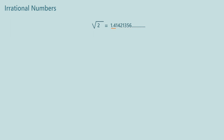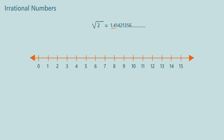Let us see how to represent this on the number line. Though we can show it on the number line, we are not able to measure it accurately in spite of having enough tools to measure. Such numbers are not measurable, or we cannot estimate them precisely. These numbers are not rational numbers and hence are called irrational numbers.